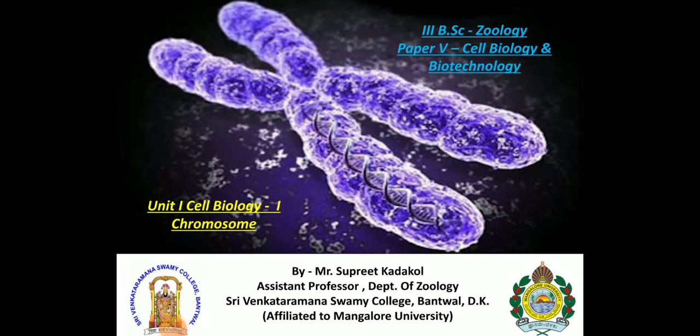Hello everyone. In this session we are going to discuss about chromosomes. We have already discussed about morphology; here we are going to study about the different special chromosomes — that is polytene chromosomes, lampbrush chromosomes, and supernumerary chromosomes — which come under Unit 1: Cell Biology, Paper 5: Cell Biology and Biotechnology.